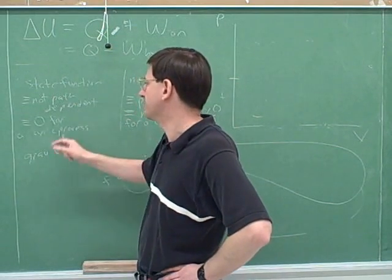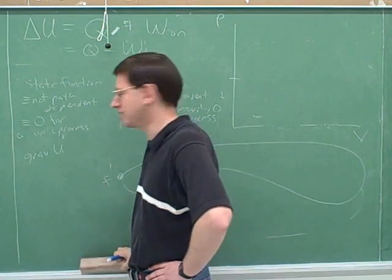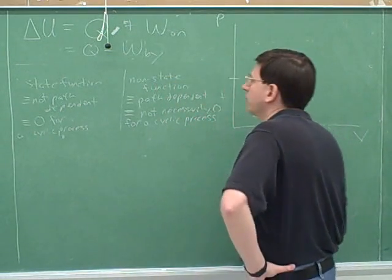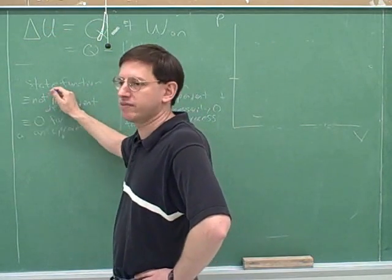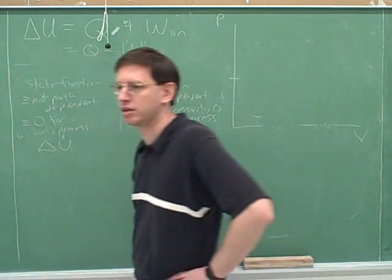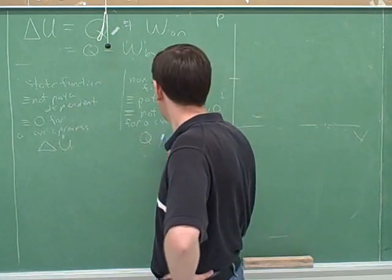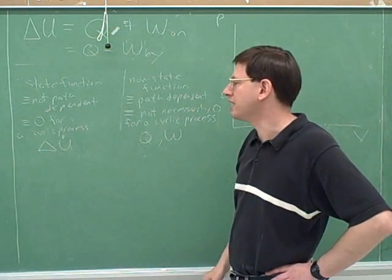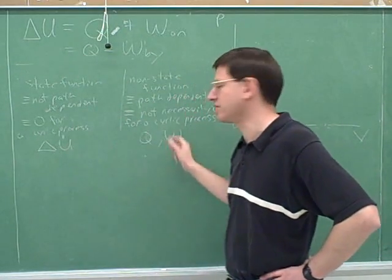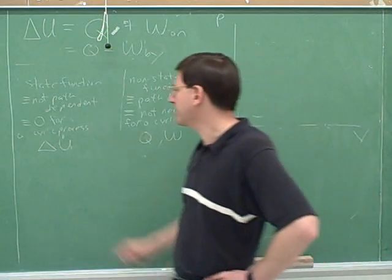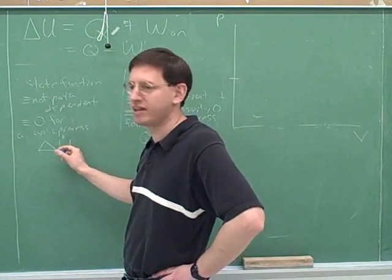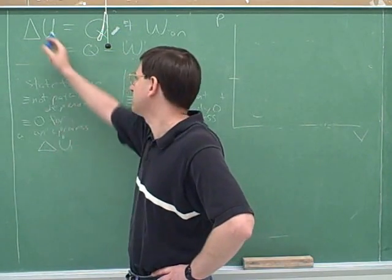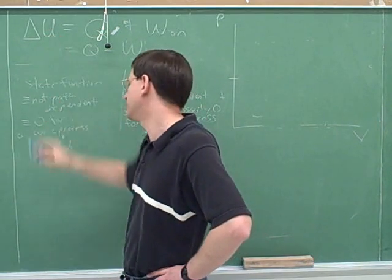The gravitational potential energy is a good example of a state function: it only depends on the initial and final points, and it's zero for a cyclic process. This is going to turn out to be very important. It turns out that delta U — the change in total internal energy — is a state function. In the fundamental law of thermodynamics, the delta U portion is a state function. It makes sense because delta U means U final minus U initial, so all that matters is the initial and final points. The total internal energy of the gas is a state function, like gravitational energy.